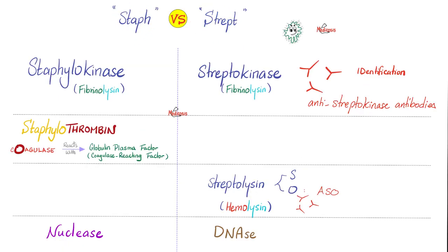Both staph aureus and strep pyogenes have fibrinolysin, with different names: staphylokinase versus streptokinase. In essence, they are fibrinolysin. We can identify the bacteria by anti-streptokinase or staphylokinase antibodies. Be very careful: staph has coagulase — it is coagulase positive. That's why most staph infections are localized in one area, such as folliculitis or abscess. Streptococcus is coagulase negative, so they spread like crazy: erysipelas, cellulitis, necrotizing fasciitis.